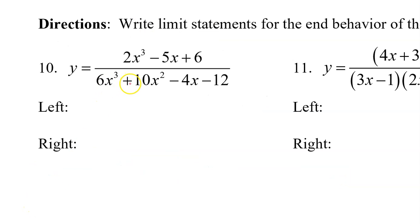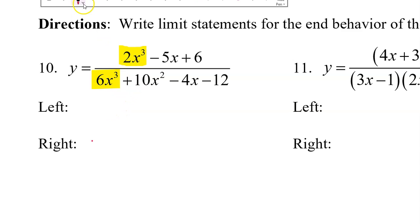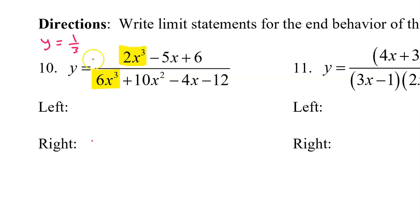For the next few problems, we will write limit statements for the end behavior. For number 10, we notice that the leading terms of the numerator and the denominator have the same degree. That means there is a horizontal asymptote, and specifically the horizontal asymptote will be y equals one-third, because the x to the third power would cancel out, leaving 2 over 6, which reduces to one-third. So that's going to give us the left and right end behavior.